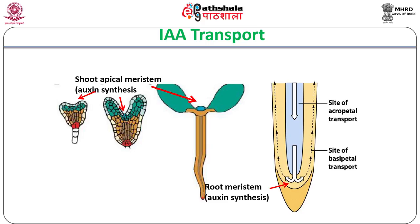Once the root apical meristem is formed, IAA synthesis occurs in this region and IAA is transported upwards or in the acropetal direction. Transport of IAA takes place through vascular parenchyma cells, cortical parenchyma cells, and even through phloem sieve elements. IAA conjugates are mainly transported over long distances through phloem.